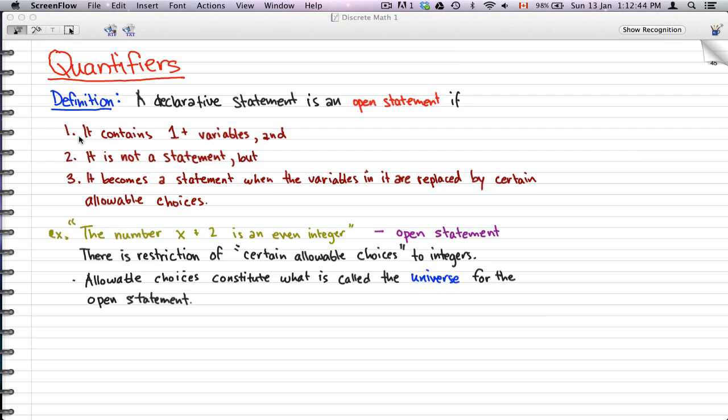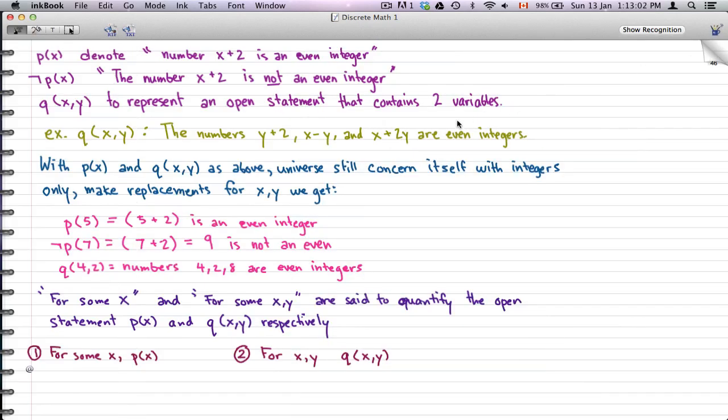Now that's what a universe is. When we talk about an open statement, we're just seeing that it contains one or more variables. It is not a statement, but it will become a statement when this variable X is replaced by something from the universe. So if you put in 3, then that would be a statement from the universe.